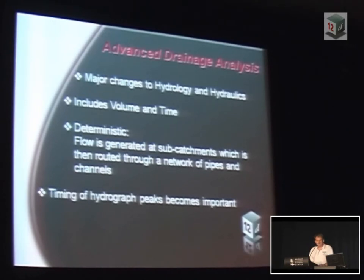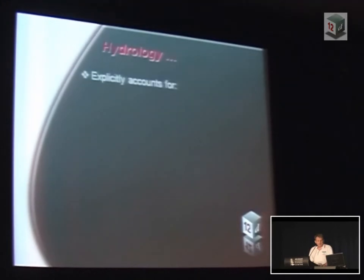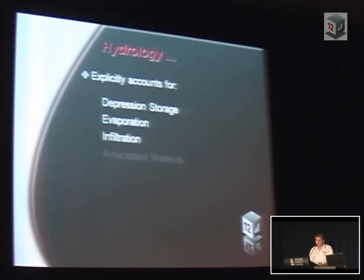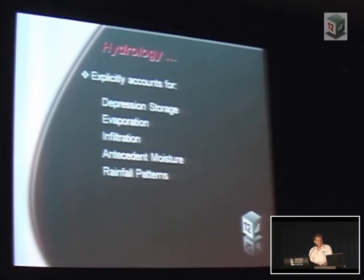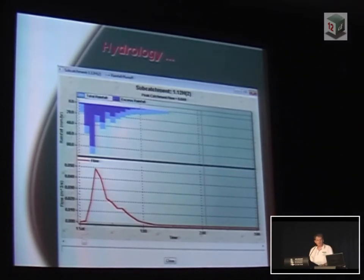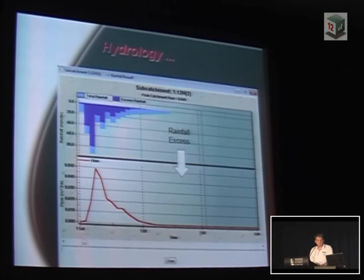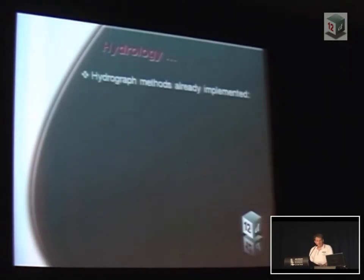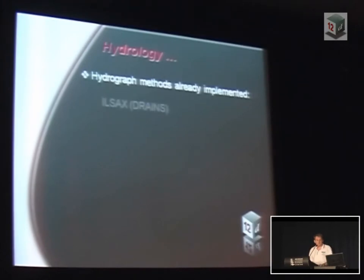The timing of the hydrograph peaks has now become more important. The hydrology accounts for depression storage — the same things as what the C value did — but now instead of coming up with a single number, we have to come up with individual numbers for each of these. We now try and model all the processes independently. In the pale blue there's the rainfall that's falling; we take off our various losses and we wind up with an excess rainfall, then route that through some sort of a black box and we wind up with a flow. There are probably hundreds of different hydrograph methods that give wildly different answers.